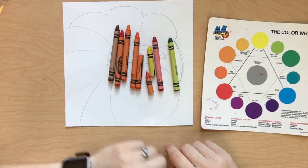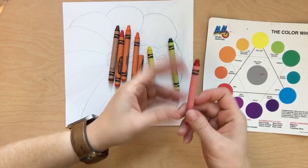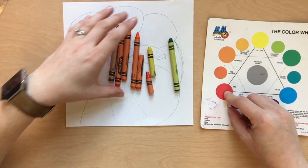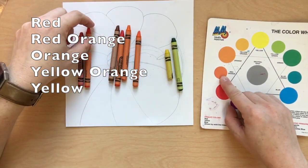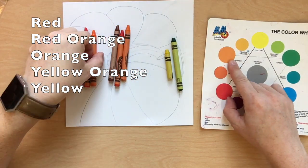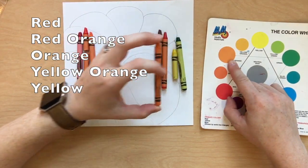Crayons, colored pencils, or twistables will work best for this project. Looking at our color wheel, we will be using the analogous colors, which are three or more colors touching on the color wheel, going from red all the way to yellow.